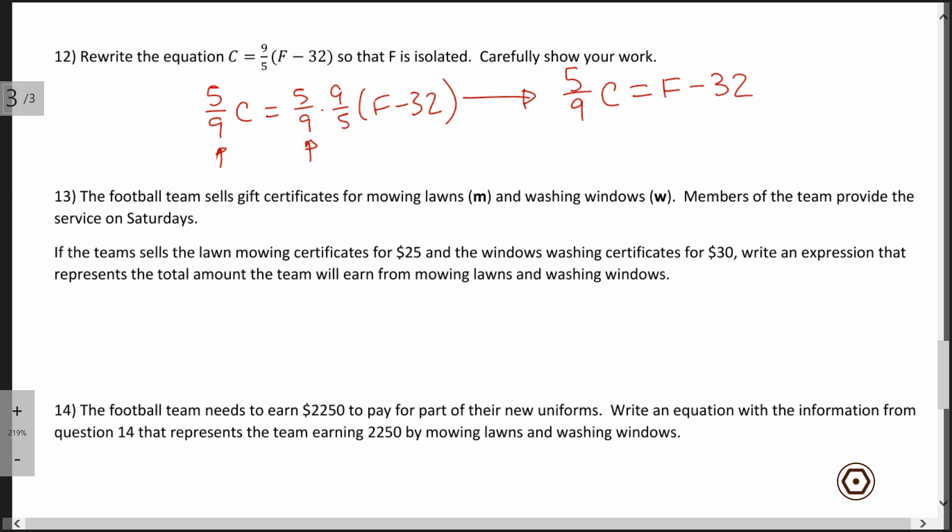In order to get F completely by itself, I'm just going to add 32 to both sides. Here I'm using the addition property of equality, adding the same thing to both sides. Earlier, I was multiplying both sides by the same value.